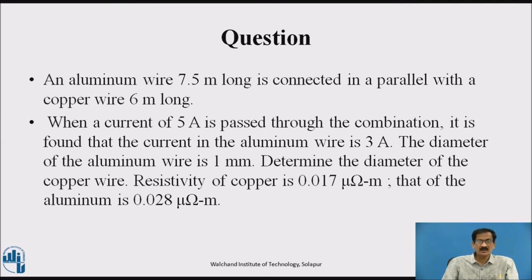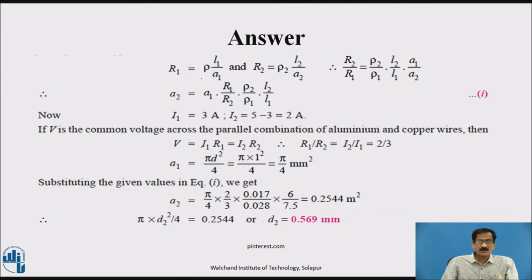Question: An aluminum wire 7.5 meters long is connected in parallel with a copper wire. When a current of 5A is passed through the combination, it is found that the current in the aluminum wire is 3A. The diameter of the aluminum wire is 1 mm. Determine the diameter of the copper wire. The resistivity of the copper wire and aluminum wire is given. Using subscript 1 for aluminum and 2 for copper: R1 = ρ1·L1/A1 and R2 = ρ2·L2/A2. If V is the common voltage across the parallel combination, then V = I1·R1 = I2·R2.